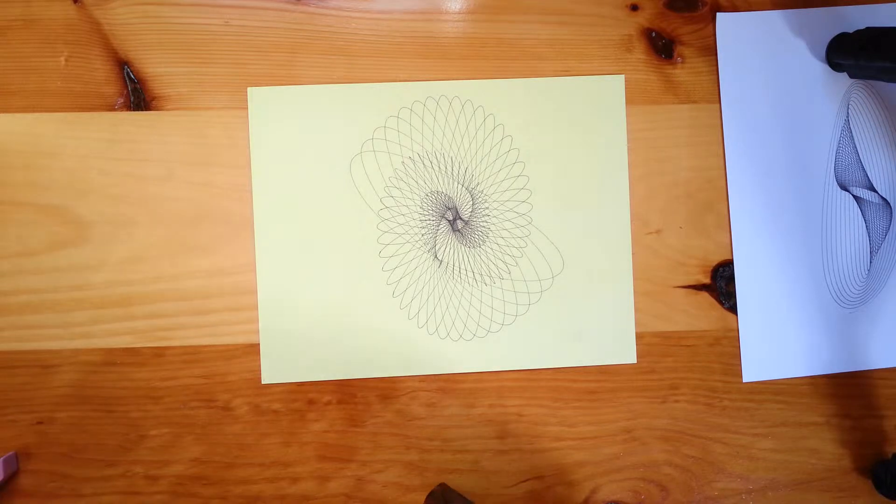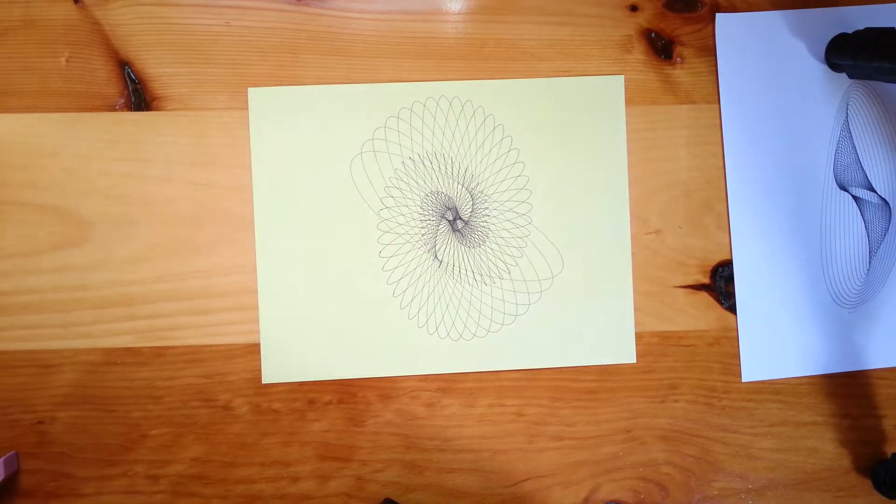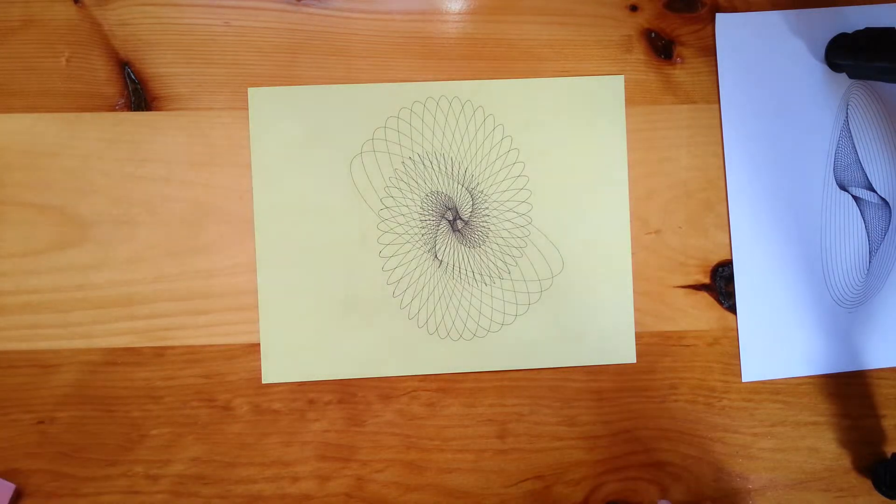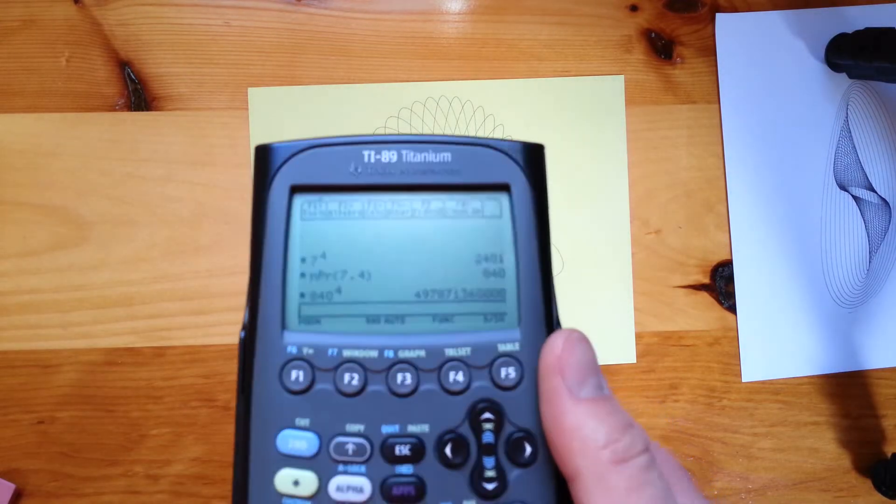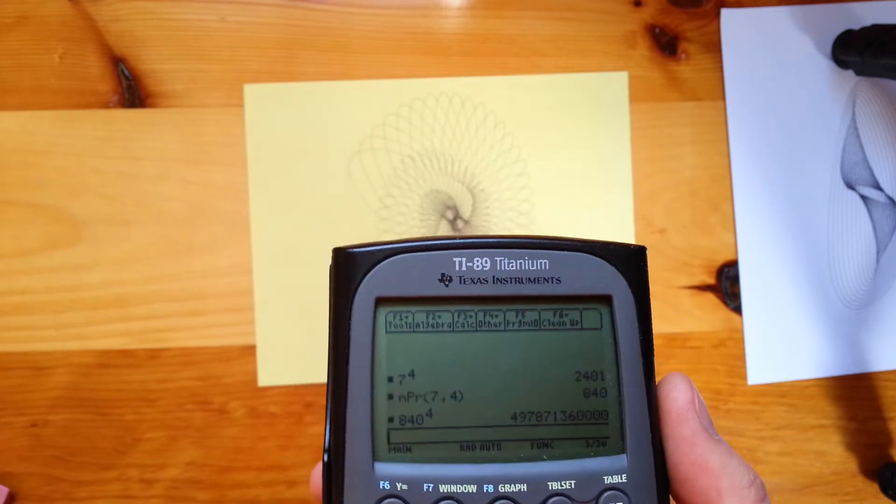On the machine I've been showing you, each pendulum arm has seven locations to put weights. So the number of total permutations that you can arrange the weights is seven to the fourth, which is 2,401 different weights.